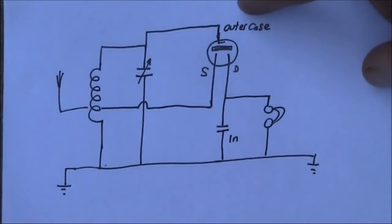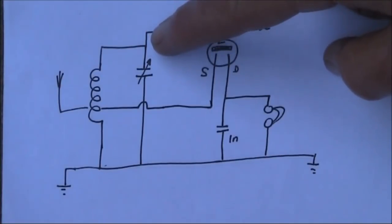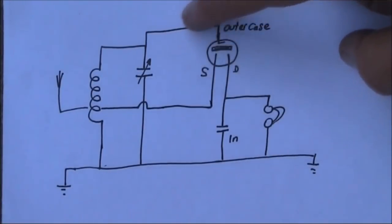An unusual thing about this particular circuit is the connections to the detector. Here I've got the outer case of the electret microphone which I believe is coupled through to the gate of the FET inside the microphone. That goes to the top of the variable capacitor and the coil.